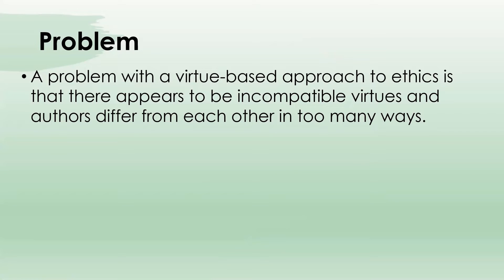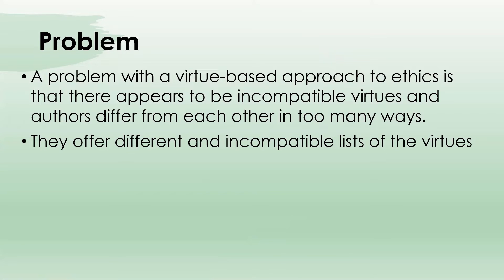MacIntyre covers the history of virtue theorists as he develops his own theory. He looks at people like Homer and Aristotle, Sophocles, the New Testament authors, medieval thinkers, fictional authors like Jane Austen, and people like Ben Franklin. As he does so, he sees that they are very, very different in how they approach this — they offer different and incompatible lists of the virtues themselves.